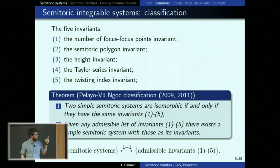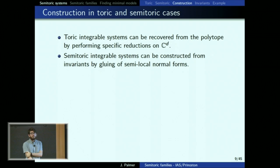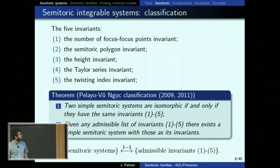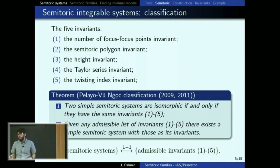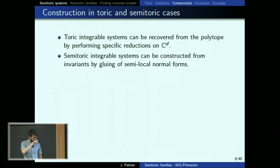I have two things to do next: explain each of the five invariants in detail with pictures, and give an explicit example. [Question: Is the position of the focus-focus points part of the invariants?] Well, the semi-toric polygon sort of tells you the vertical position of them, and the height invariant — which is the volume of a sub-manifold — tells you their height in the polygon. So essentially the position is encoded.